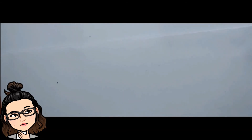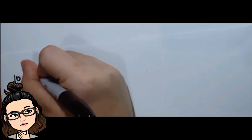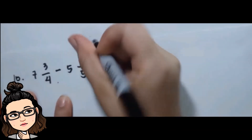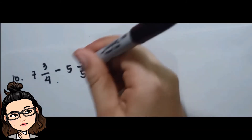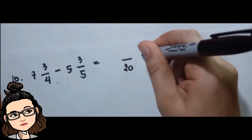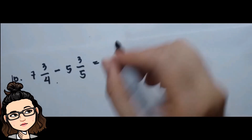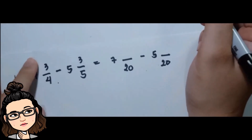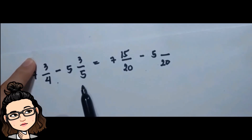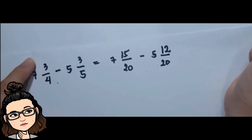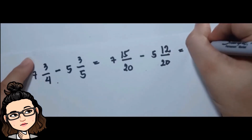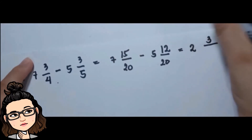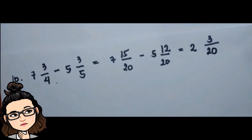Now subtraction with dissimilar mixed fractions: 7 and 3/4 minus 5 and 3/5. The common denominator of four and five is twenty. Twenty divided by four is five, times three is fifteen; twenty divided by five is four, times three is twelve. Seven minus five is two, and fifteen minus twelve is three. Copy the denominator. The final answer is 2 and 3/20.